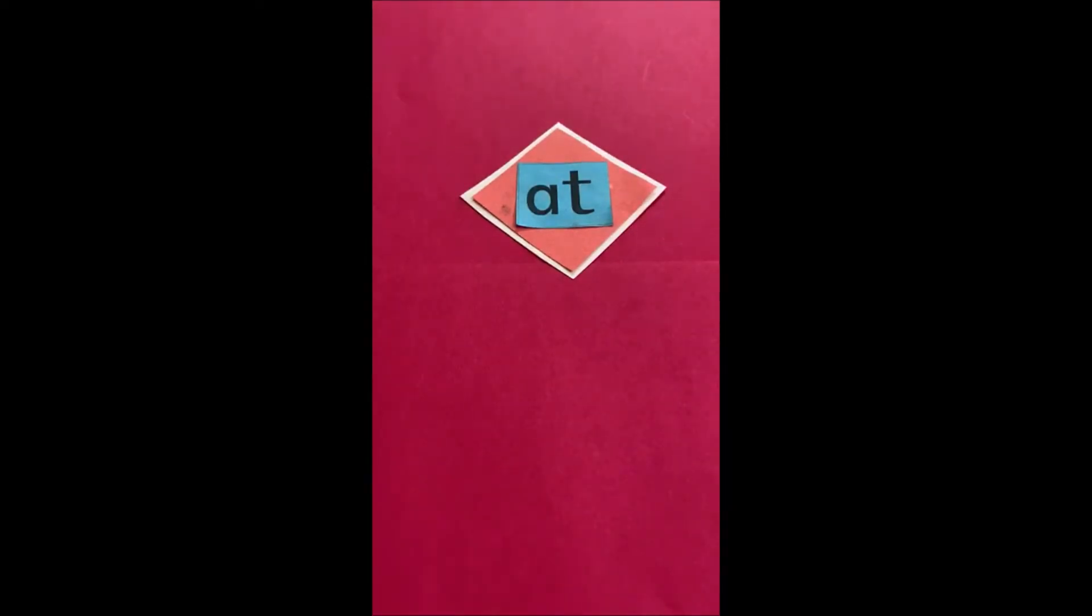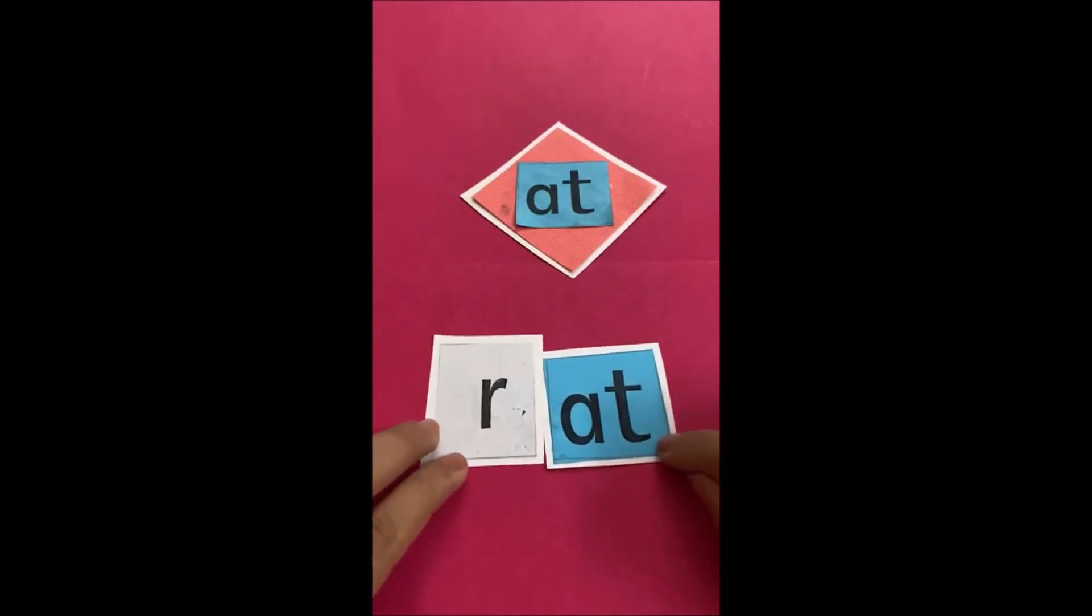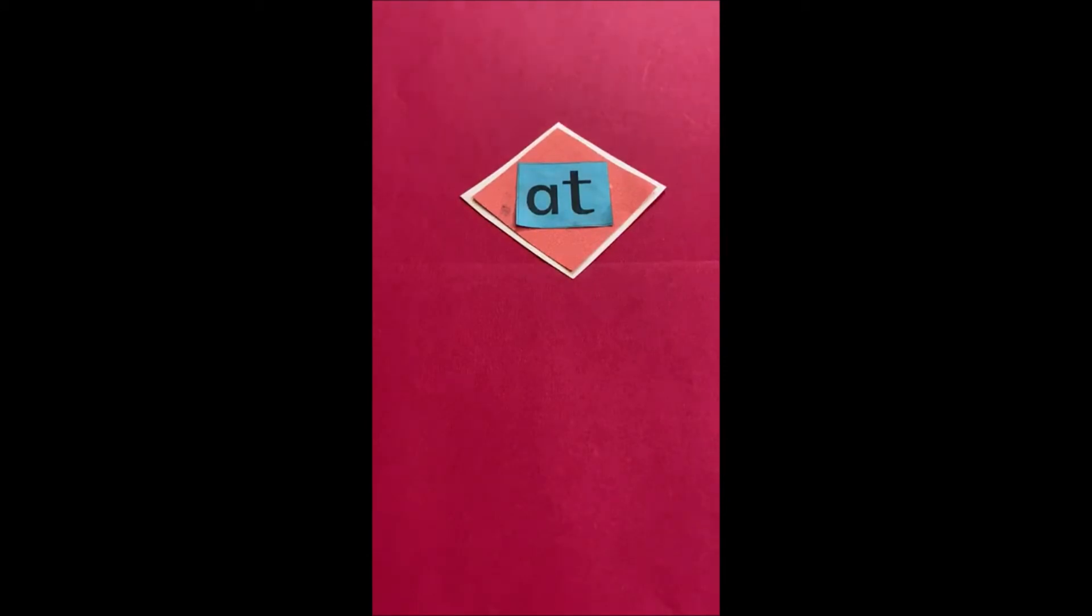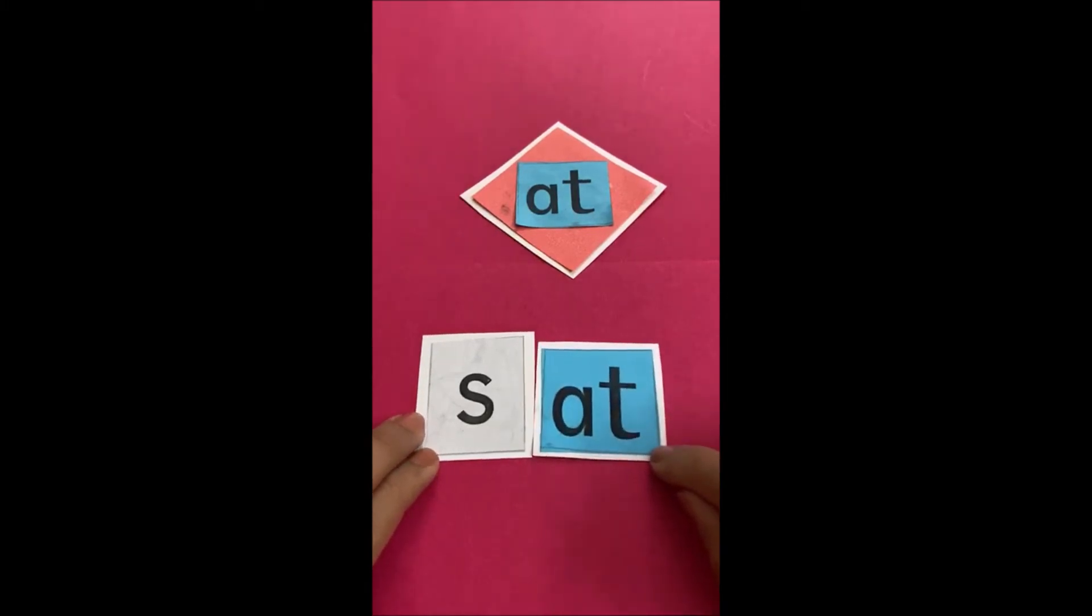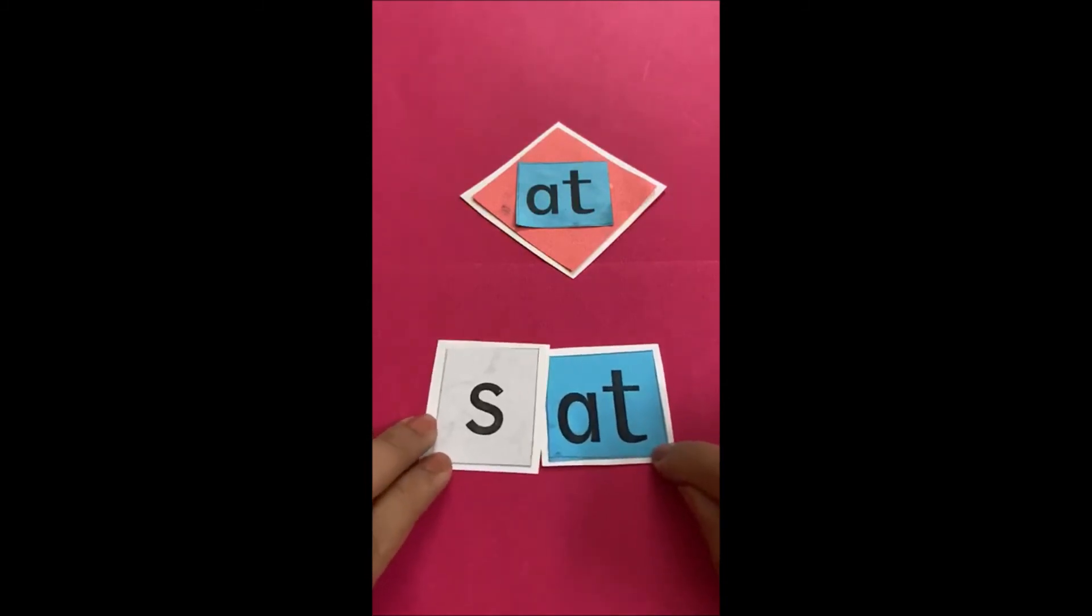Now comes R. R says R. R and at. Rat. R and at. Rat. Now the letter is S. S says S. S and at. Sat. S and at. Sat.